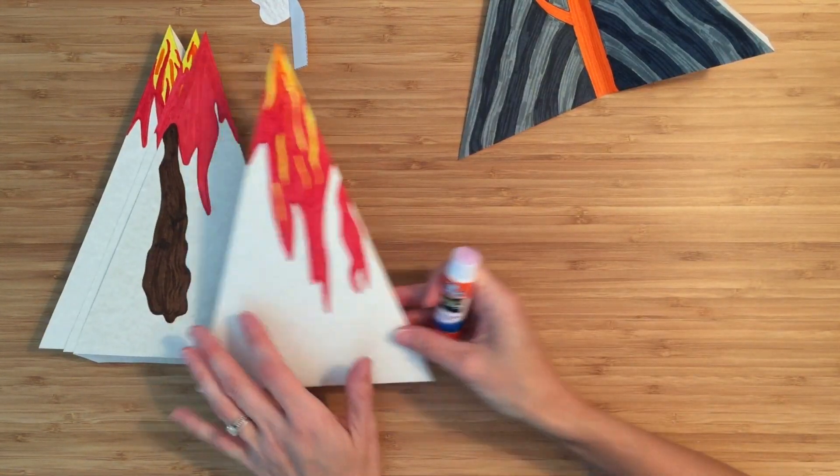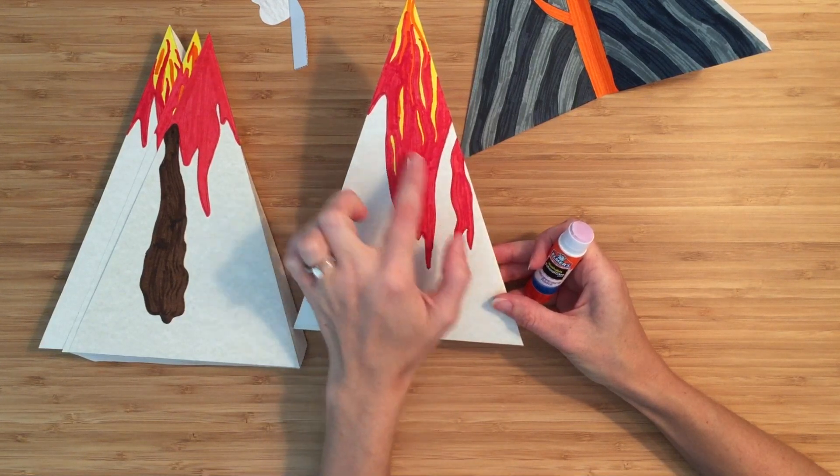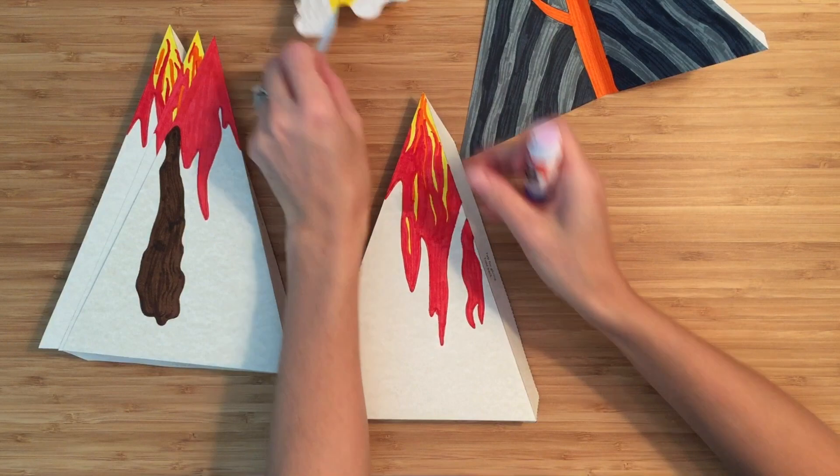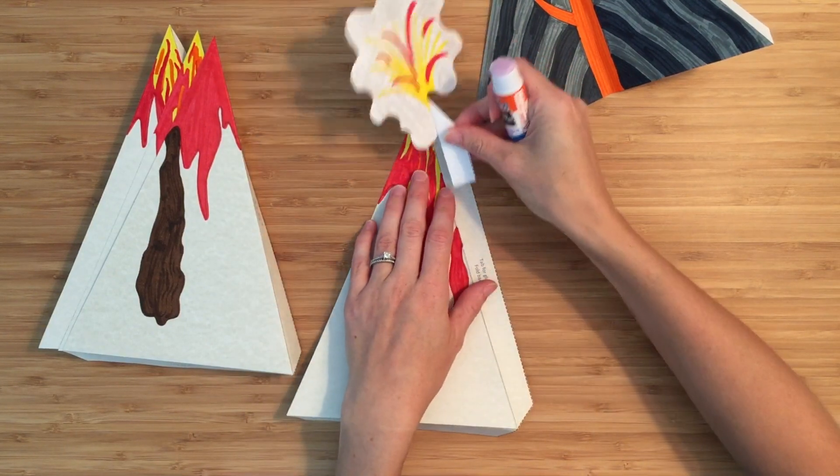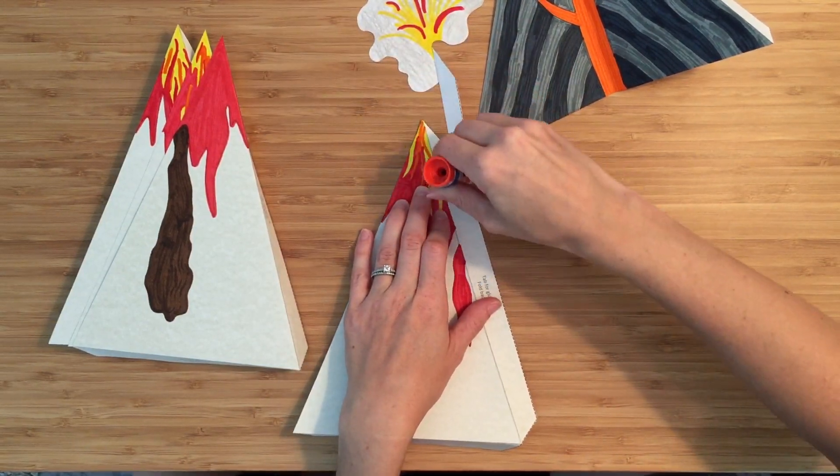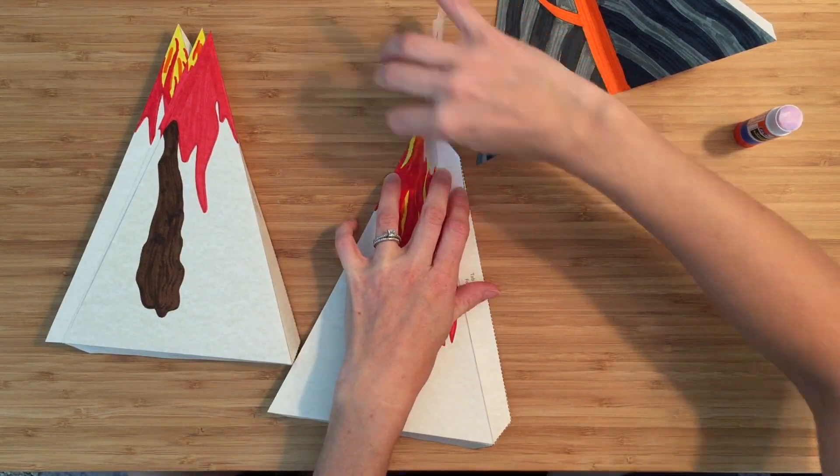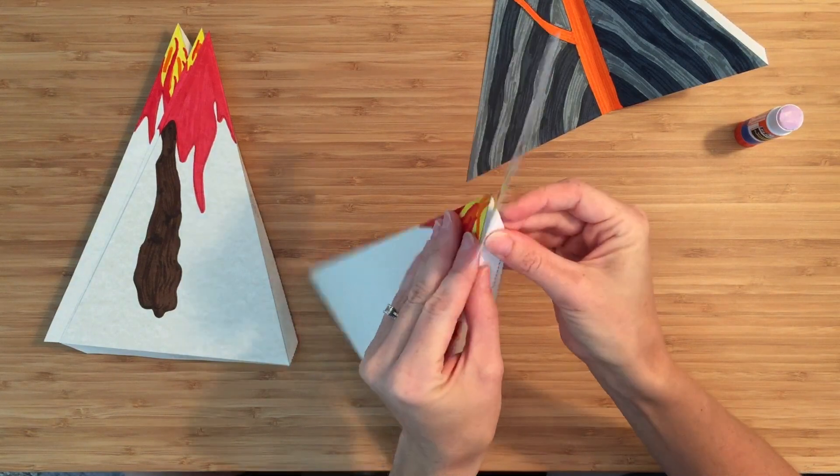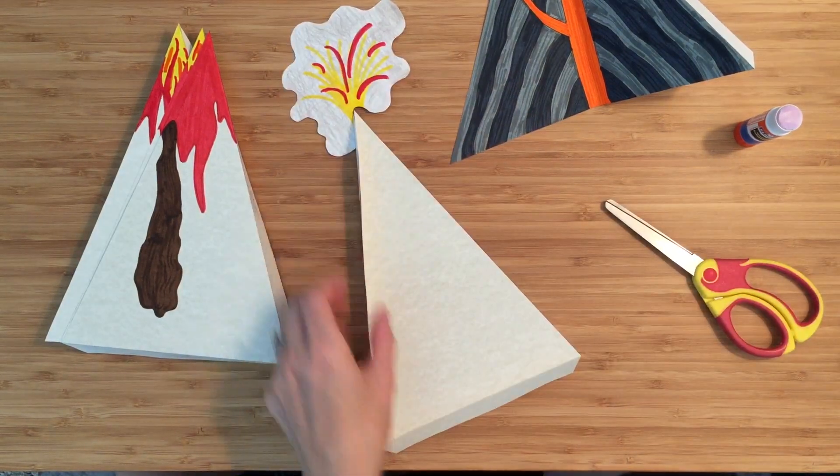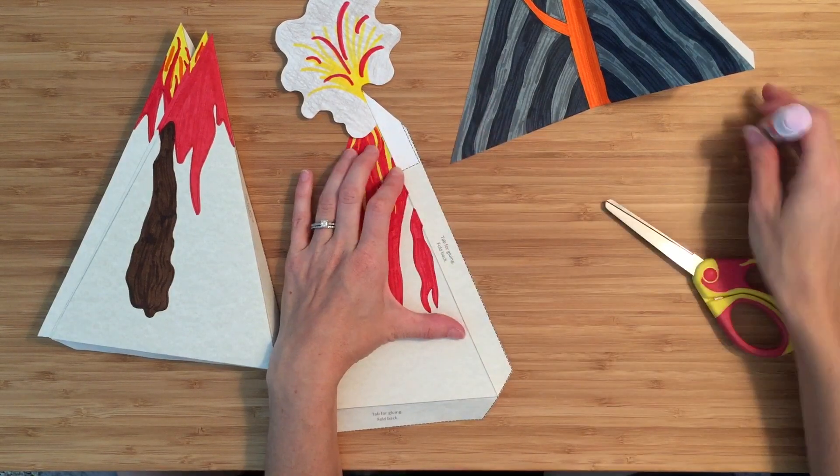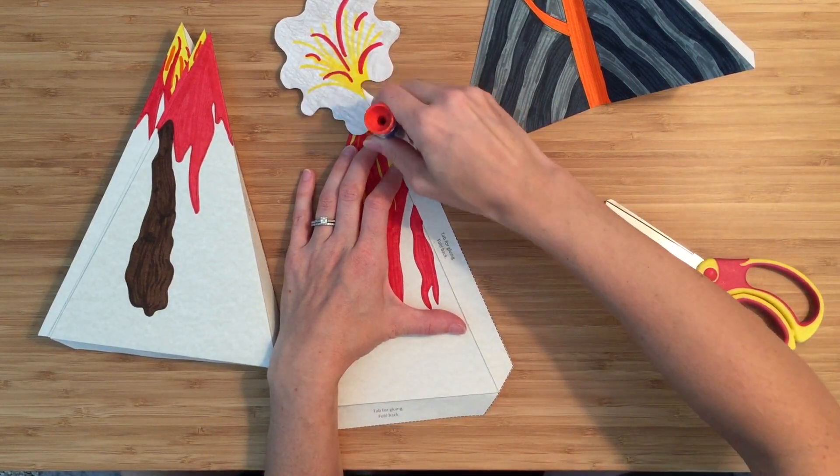Now remember I told you to keep track of this piece that's got the extra second lava flow on it? I'm going to work on that next. And I'm going to attach this to it. Now I'm going to put glue on this whole thing and attach it to the interior.